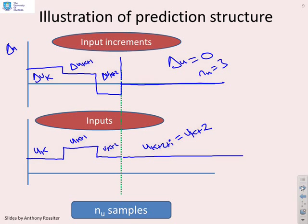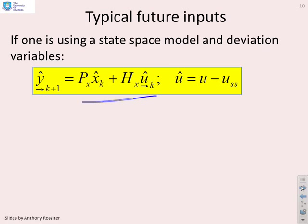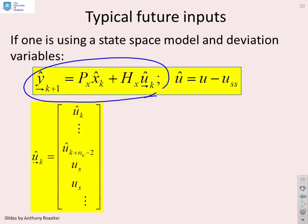Now, if you were using a state-space model and deviation variables, you'd have something very slightly different, because the prediction equation is then of this form. And therefore, what you might do is you might say, okay, I'm going to assume the deviation variables. There you go. Now, in this case, there's something slightly subtle. I'm going to make that NU minus 1. So, you've got particular values for the deviation variables for NU minus 1 samples, and then, in the long term, I assume that the deviation variables become fixed.